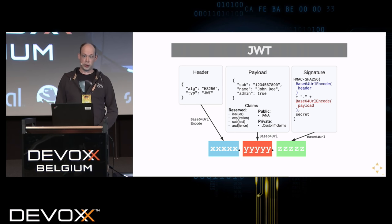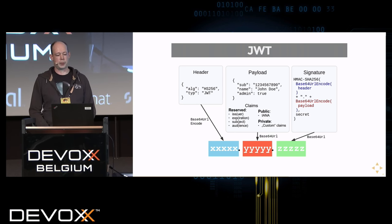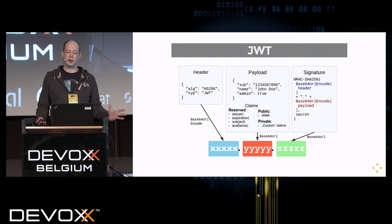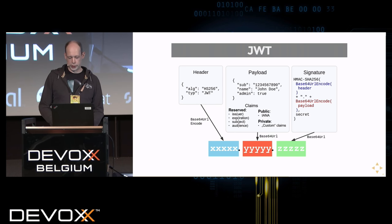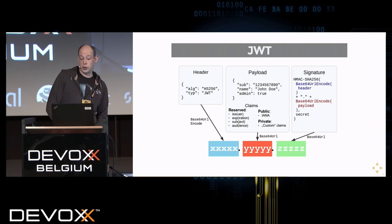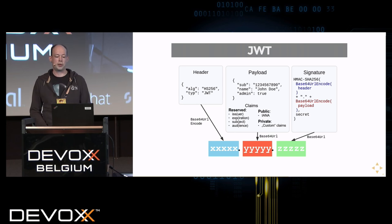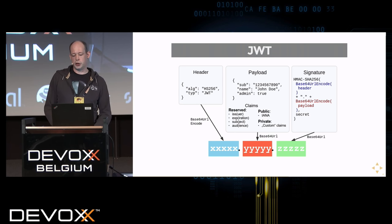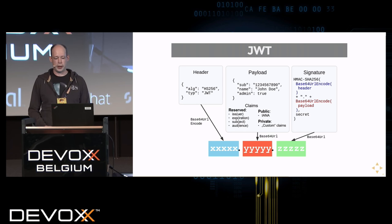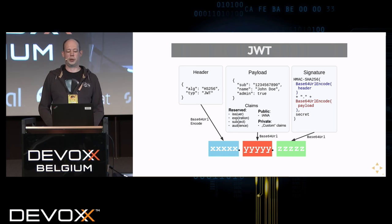The payload includes all the data you want in the token: the subject — essentially a user ID — a name, and other fields. There are reserved claims defined by the specification such as issuer, audience, and expiration date to make it short-lived. The signature includes a cryptographic signature of the header and payload to ensure the token hasn't been tampered with. All parts are base64-encoded and separated by dots, used as a string that can be passed around.